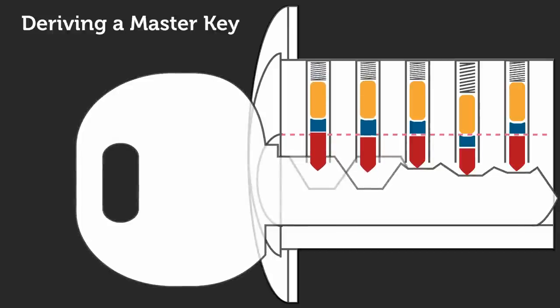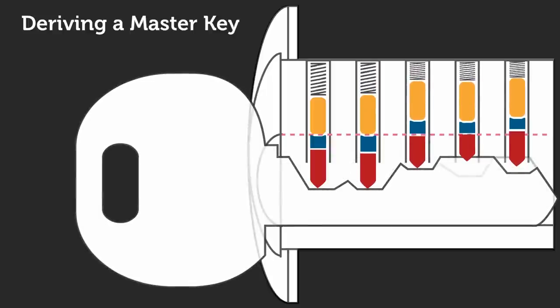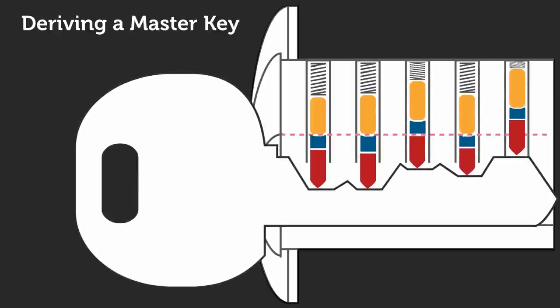To do this, we're going to make 5 copies of our user key, leaving one position blank on each of the 5 keys. For each of these keys, we'll insert them into the lock and try to turn.